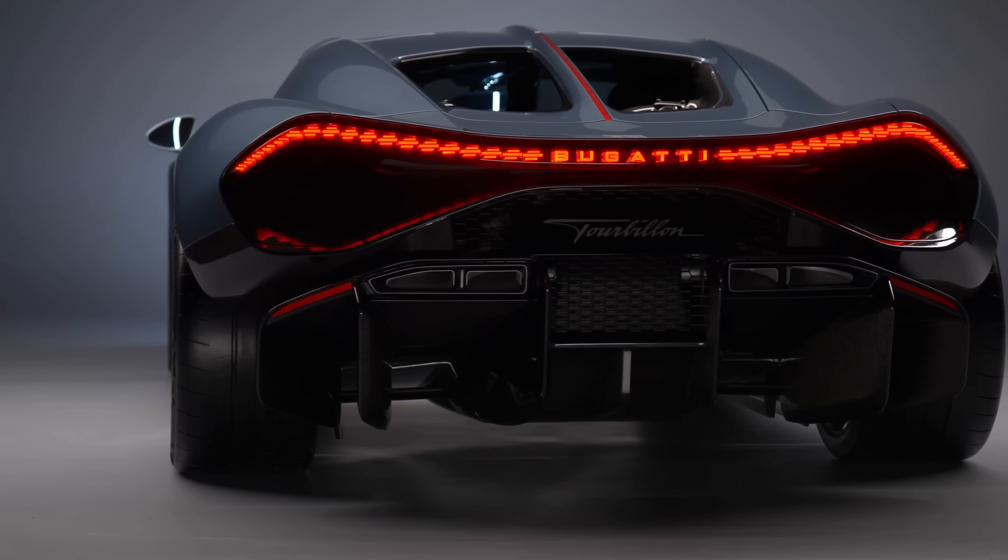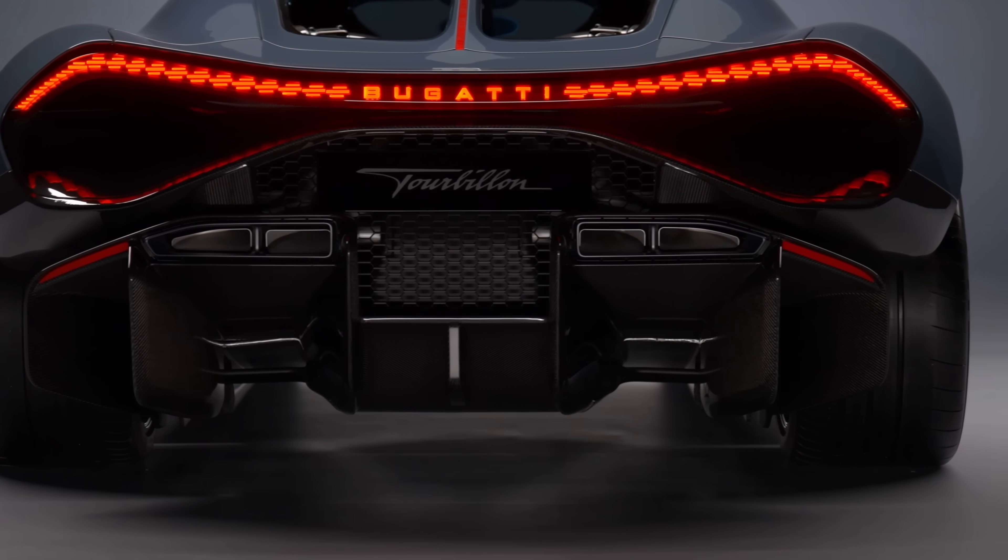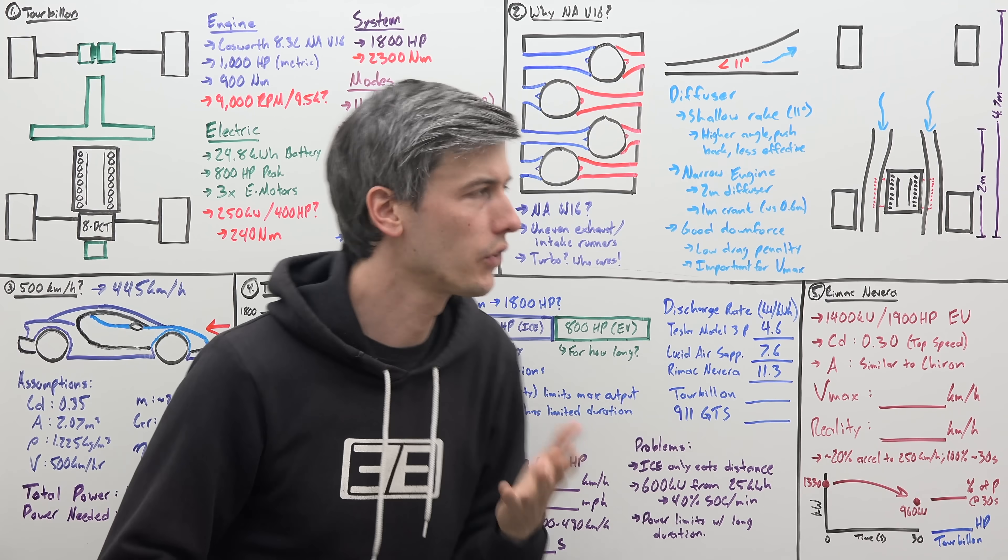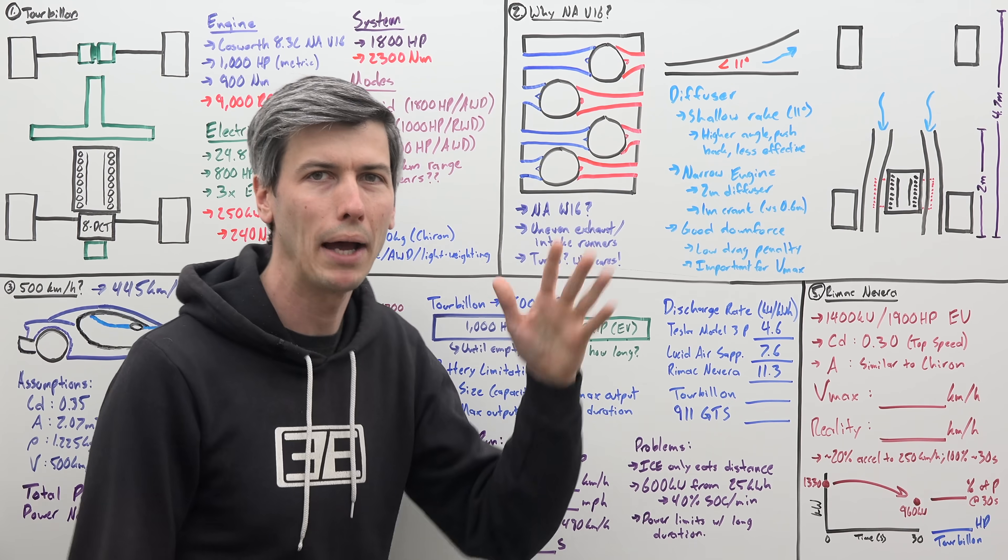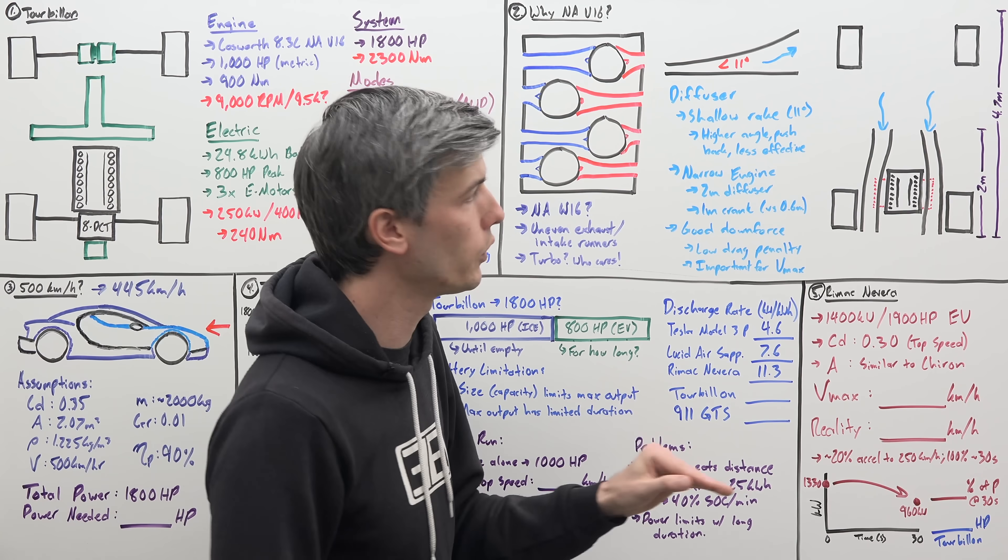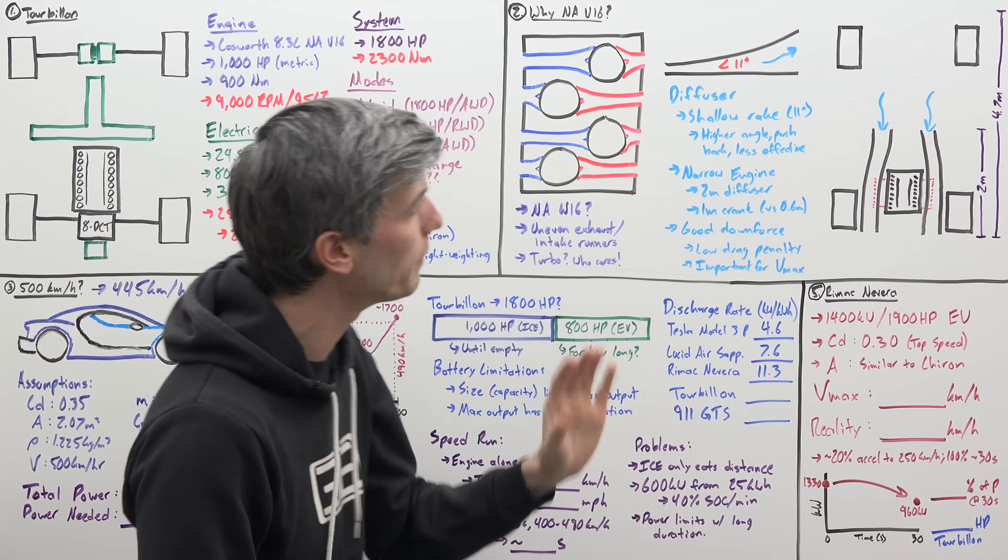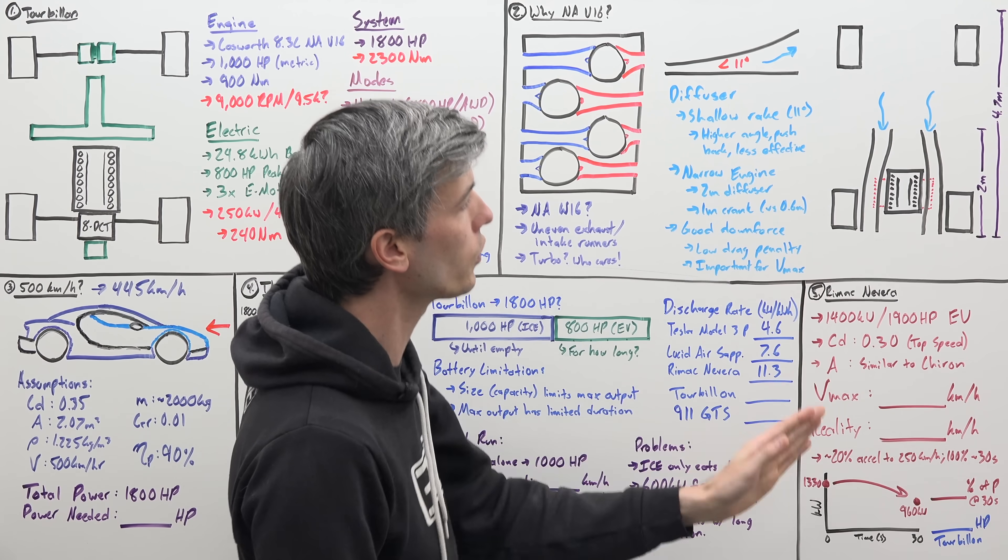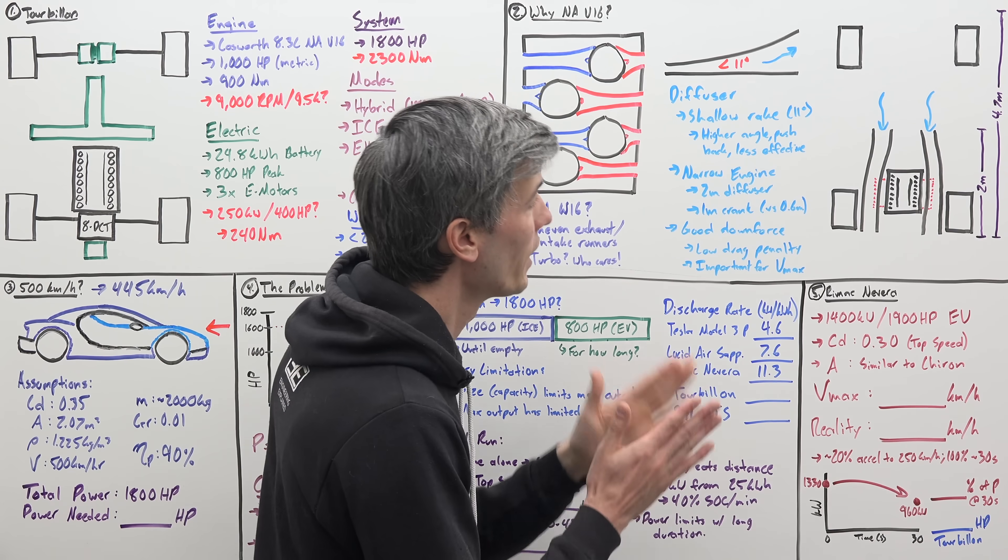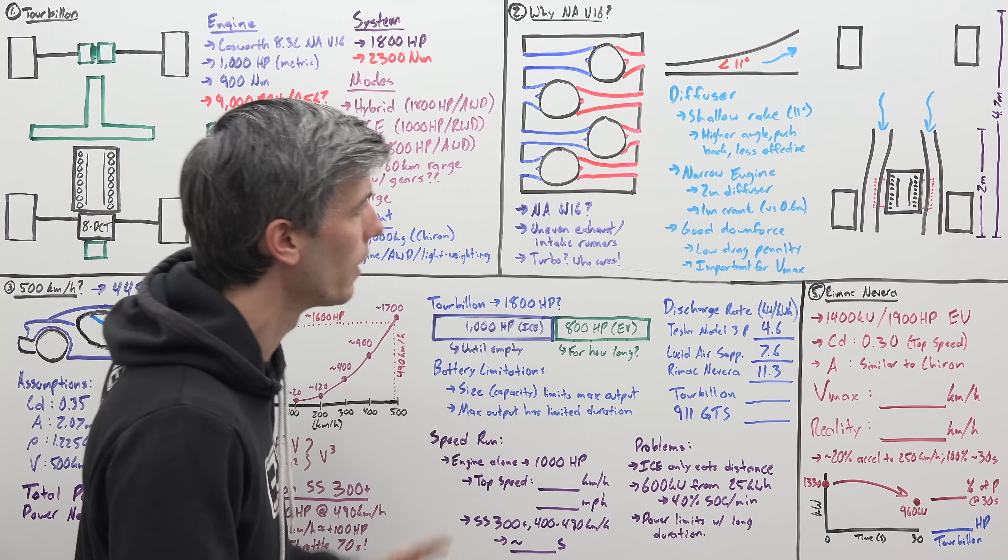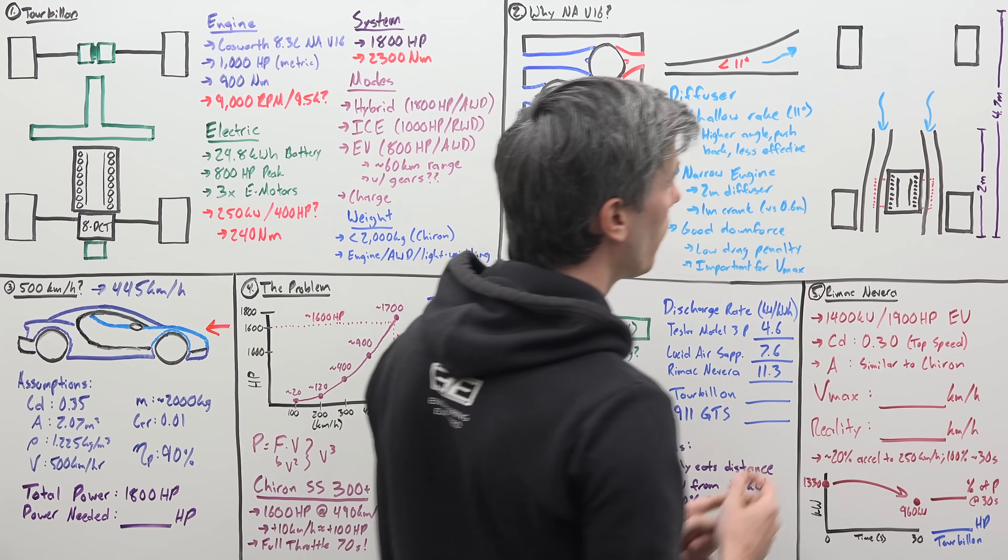Now, at the back of the vehicle, you'll notice a clever perk of the result of using this V16 engine, and that is we have this massive diffuser. Now, the challenge with diffusers is that you don't want a really steep angle, they become less effective. So you want an angle of about 11 degrees, but what that means is you need the diffuser to extend really far up the car. And so it's actually about 2 meters on the Tourbillon, which is quite long, and it puts it about halfway through the car. Now, if you were to have a wide engine, then you're suddenly in the path of this diffuser.